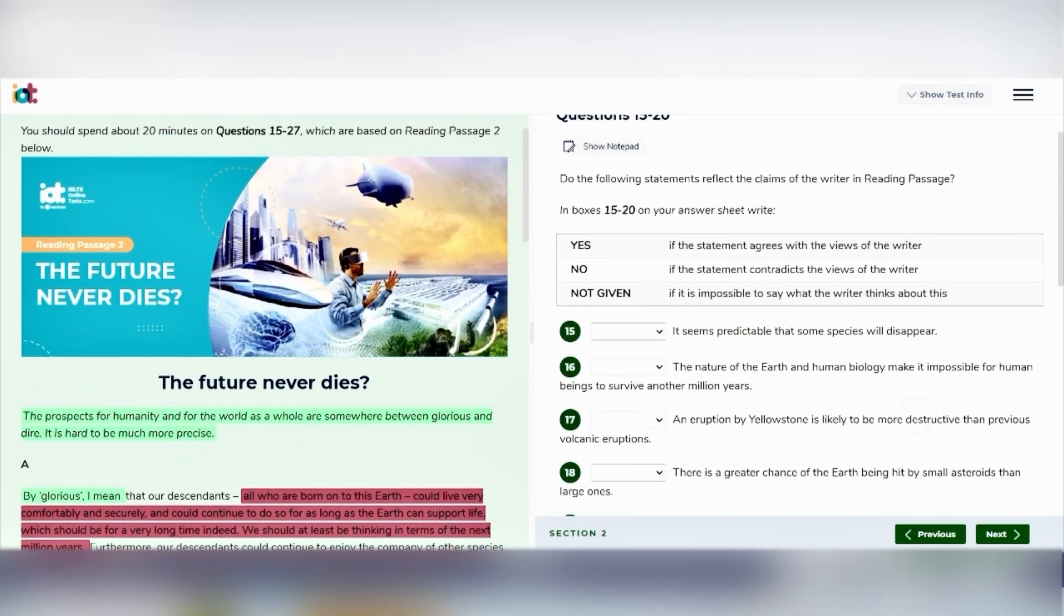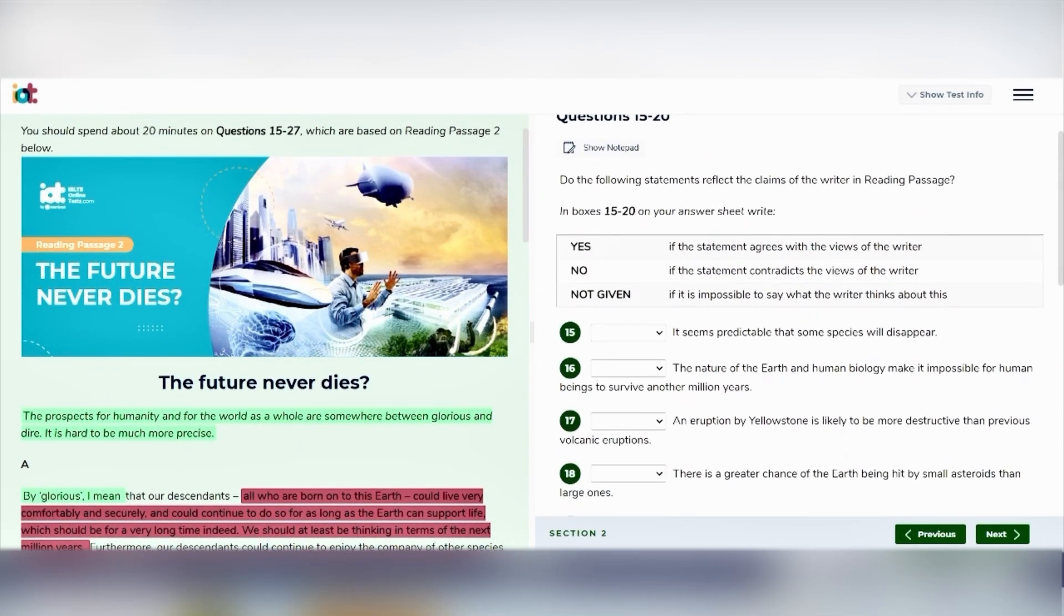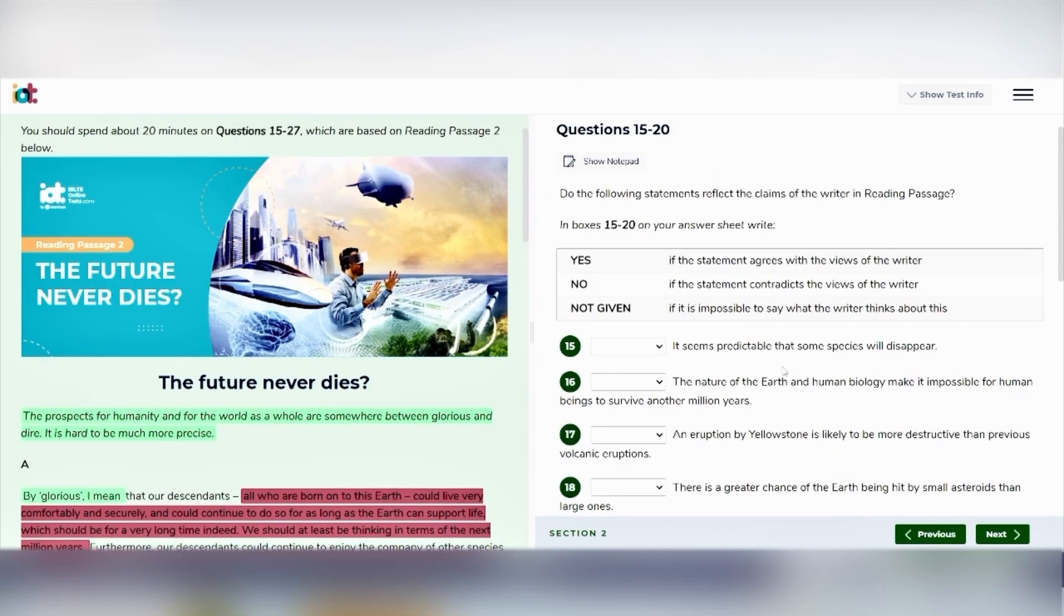So let's start our first question, that is question number 15 here. And this question, the statement is: it seems predictable that some species will disappear. Okay, we'll read the passage now. The future never dies. The prospects for humanity and for the world as a whole are somewhere between glorious and dire. It is hard to be much more precise.